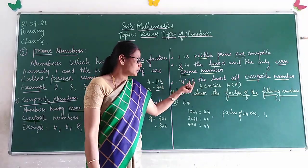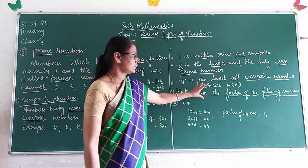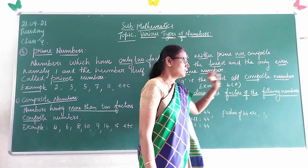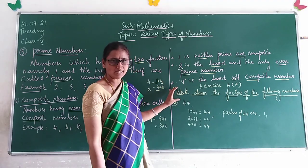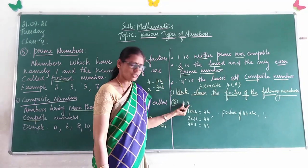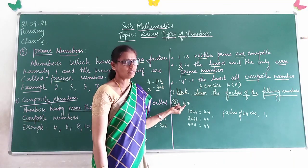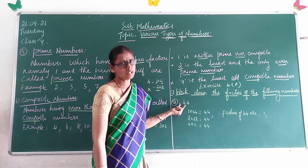Children, now we will do some exercises. First, you have to write down the factors of the following numbers. How will you find these factors, children? A number which divides exactly without remainder is called a factor of the number.